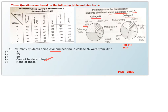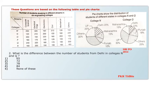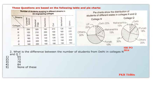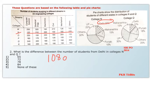The next question asks for the difference between the number of students from Delhi in colleges N and Q. In college N, Delhi's percentage is 20%. The total number of students in college N is 1080. So 20% of 1080: 10% is 108, so 20% is 216. This is the Delhi count from college N.